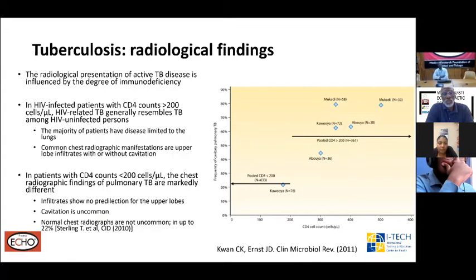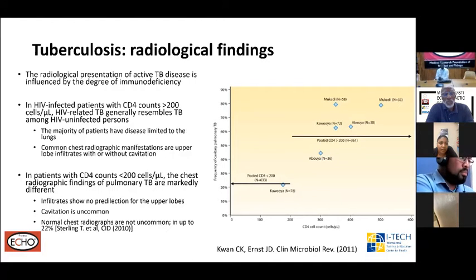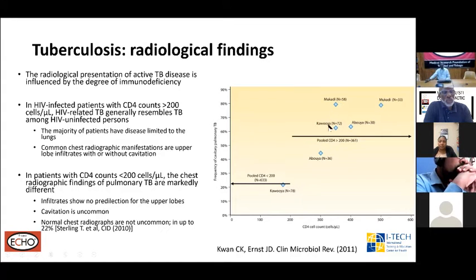Regarding radiological findings in tuberculosis chest disease: the picture depends on the degree of immunosuppression. The higher the CD4 count, the more the radiological findings mimic those of an HIV-negative person with TB — classic upper lobe cavitation. As the CD4 count falls below 200, cavitary disease becomes less common, occurring in less than one in four patients, compared to over 50% in those with CD4 counts above 200.